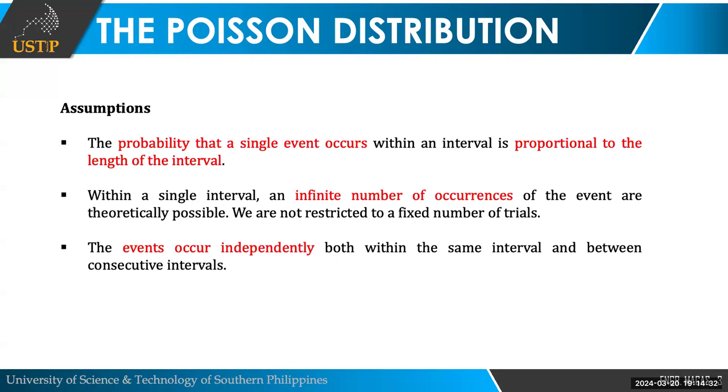These are the assumptions sa Poisson distribution. First is that the probability that a single event occurs within an interval is proportional to the length of the interval. What does that mean? Balik sa example nga, if you observe number of cars passing by in one hour, you can assume that if you lengthen the number of interval, for example, from one hour, make it two hours, the assumption is that the cars that will pass will also increase because you increased the length of the interval.